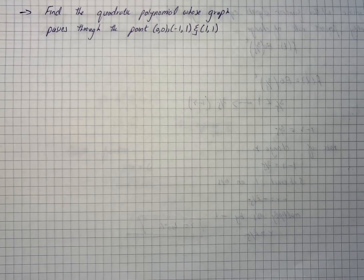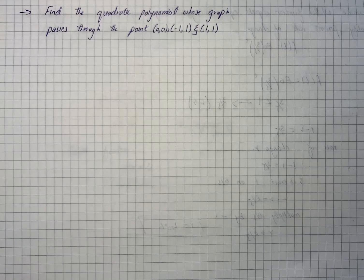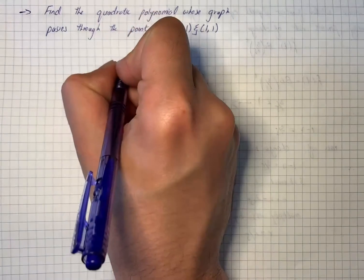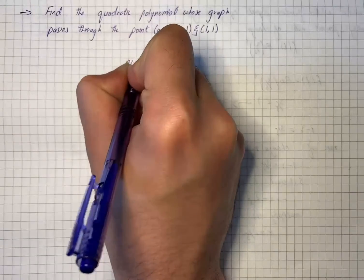The question says find the quadratic polynomial whose graph passes through the points (0,0), (-1,1), and (1,1). First of all, we will denote the interpolating quadratic polynomial by the equation p(x).